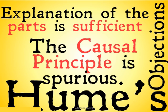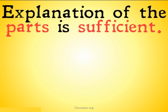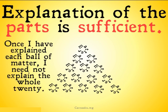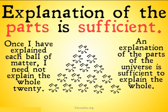Let's take a look at his arguments for each of these objections. For the first — explanation of the parts is sufficient — what Hume says is: if I have 20 balls of matter and I explain each and every one of them, I don't need to explain the whole 20, or some weird set of subsets. I just need to explain each ball on its own, and I've explained the whole set. In the same way, once I've explained every specific thing in the universe, I don't need to explain the whole universe.